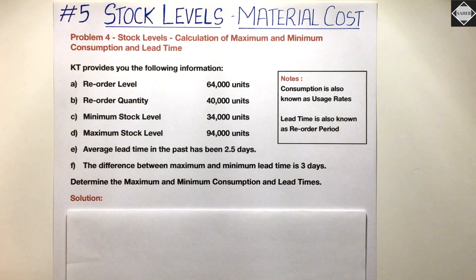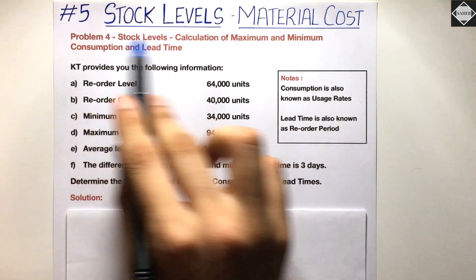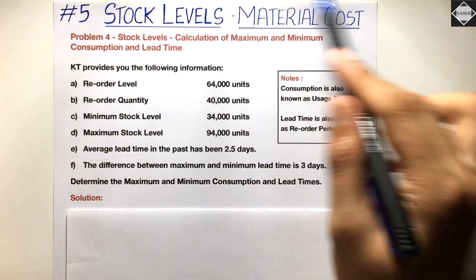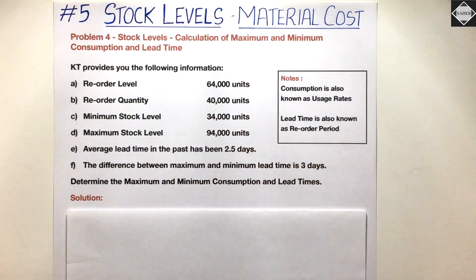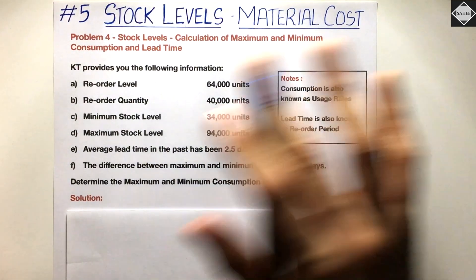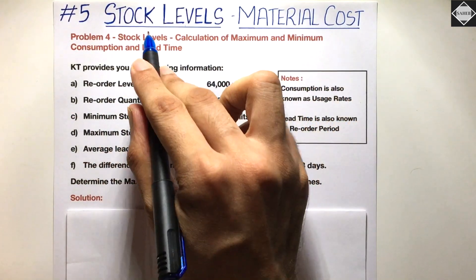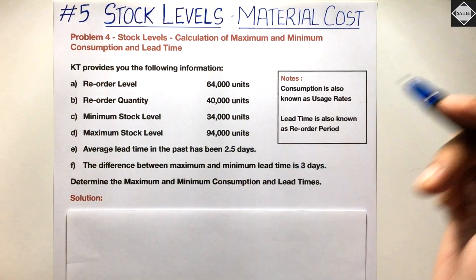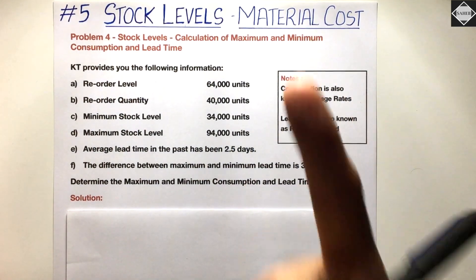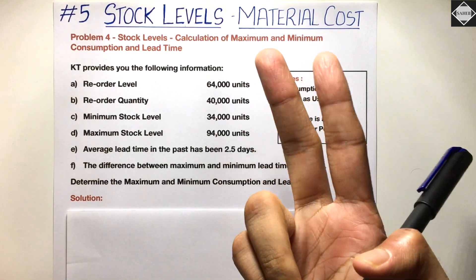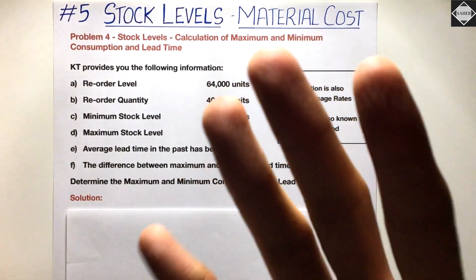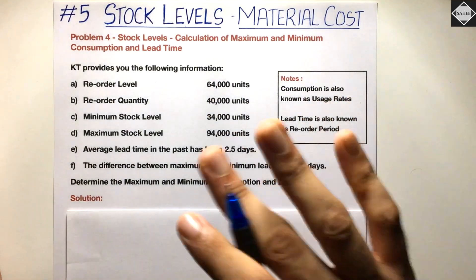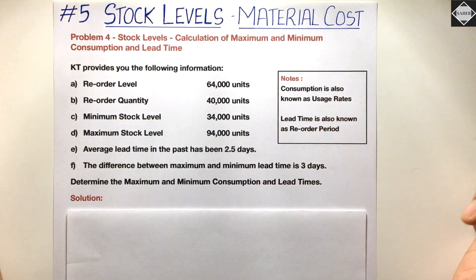Welcome back to Sahab Academy. Today in this fifth video of the stock level topic of material costing chapter, we are going to solve our fourth problem of this series. The main thing about this question is that we are not calculating any stock levels — the question has asked us to calculate maximum consumption, minimum consumption, maximum lead time, and minimum lead time.